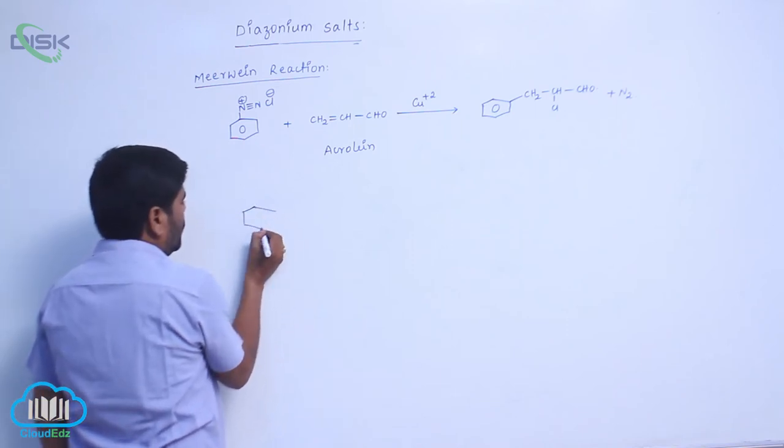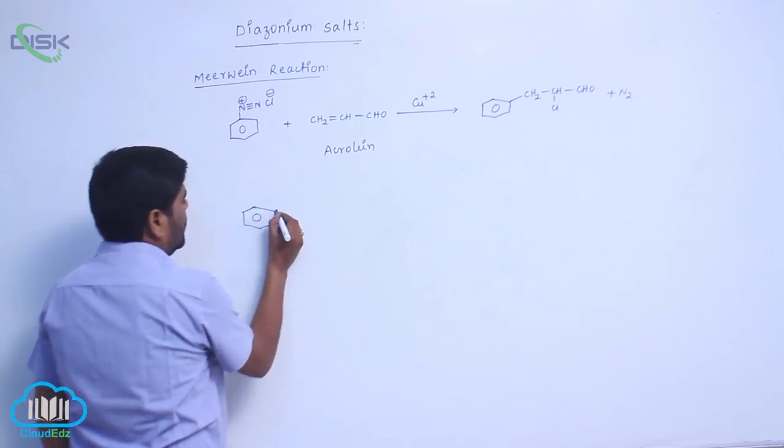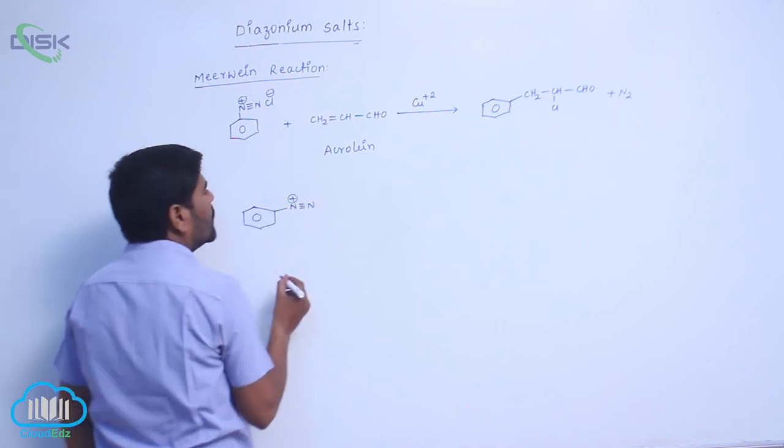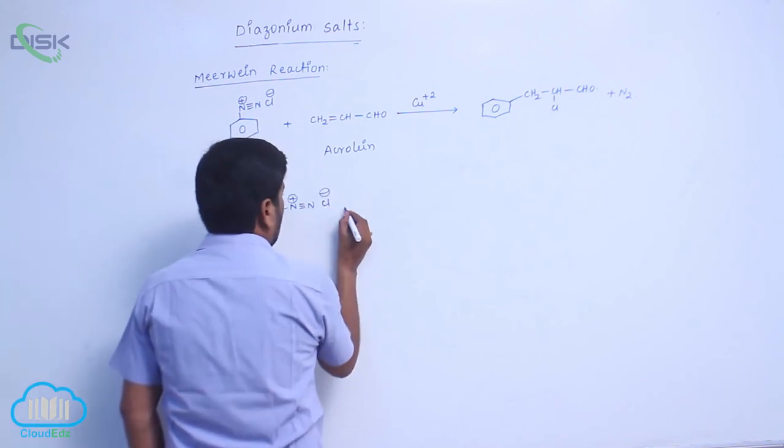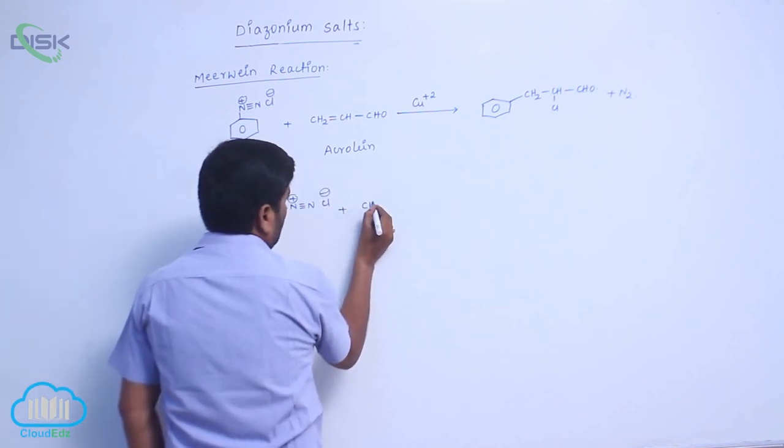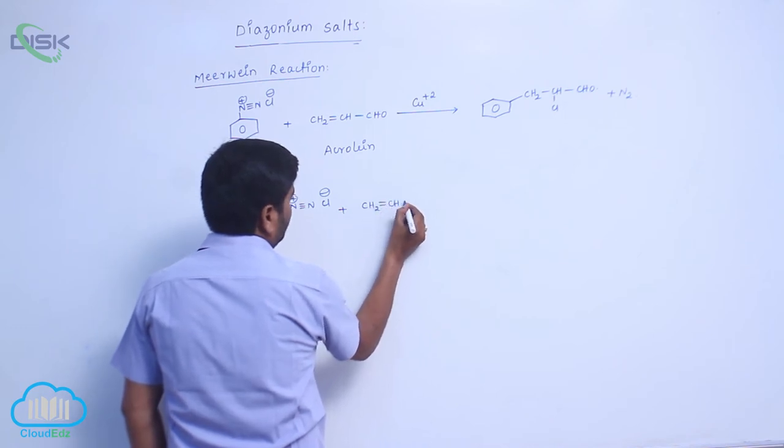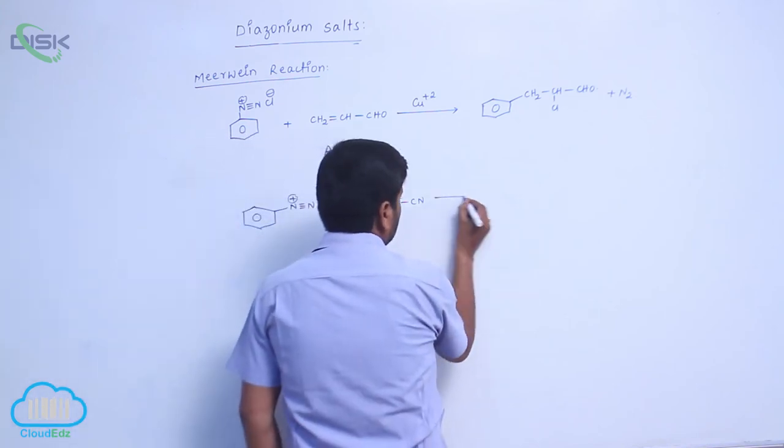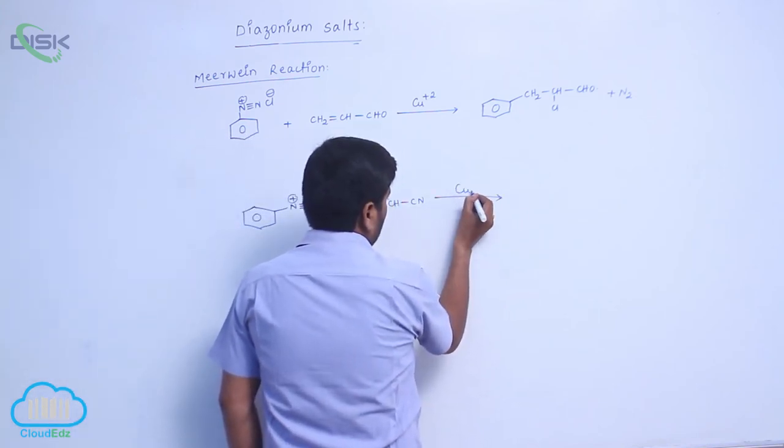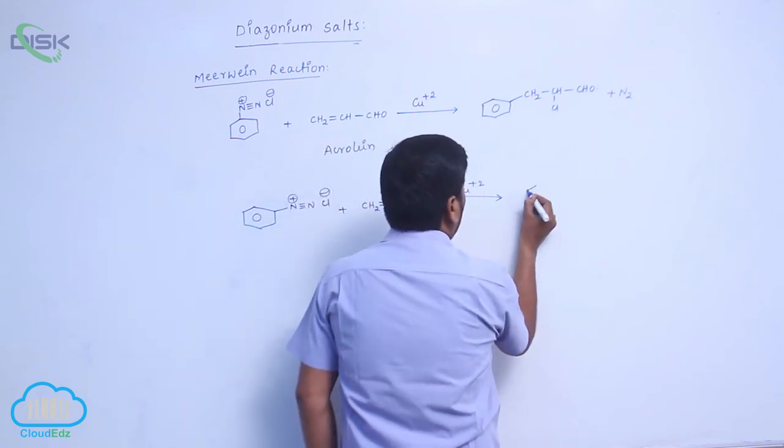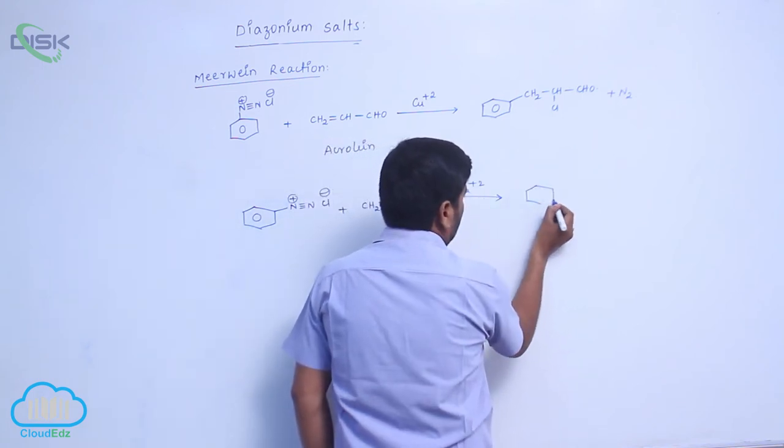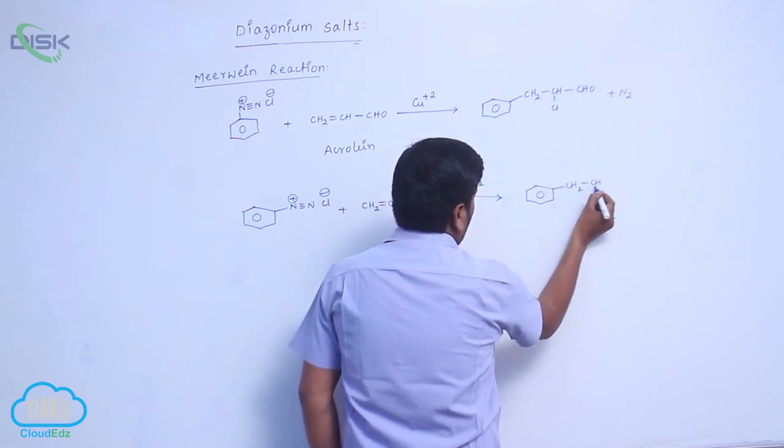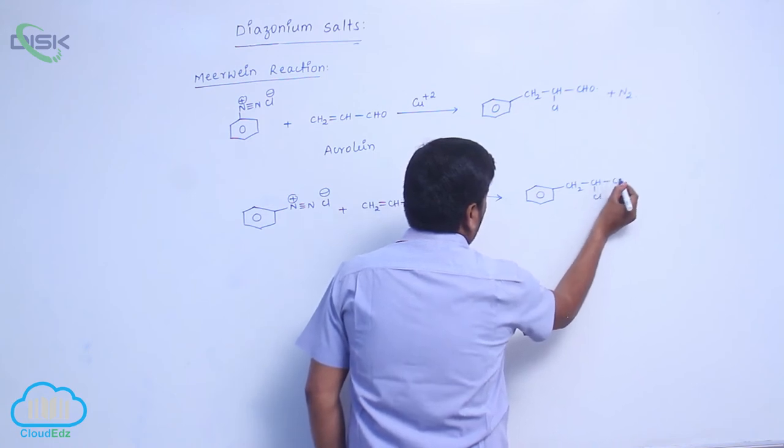This Benzene Diazonium Chloride reacts with acrylonitrile, commonly known as vinyl cyanide, in presence of copper +2 to form CH2, here is CHCl then CN.